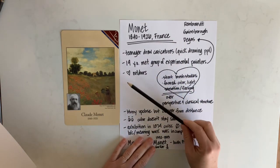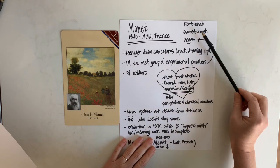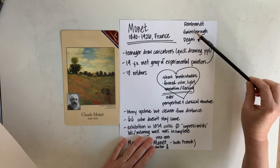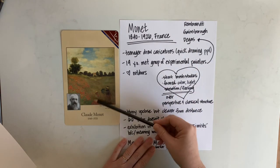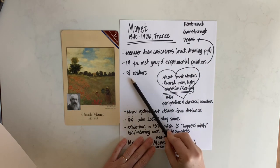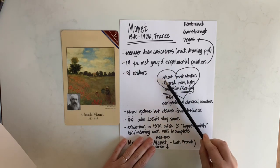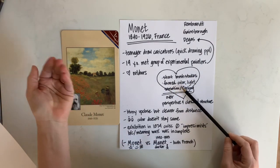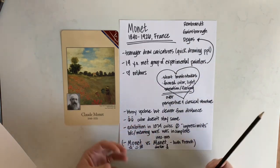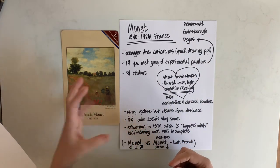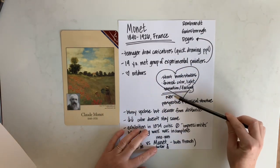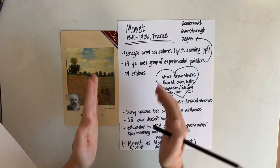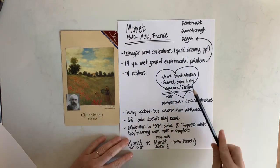Mr. Monet loved the outdoors, like Mr. Gainsborough who loved painting outdoors. You can see in his work short brush strokes — he favored really highlighting color and light, like we saw in Degas, and he loved just the sensation and the feeling in the painting. He loved and valued this over perspective and classical structure, like very symmetrical paintings.